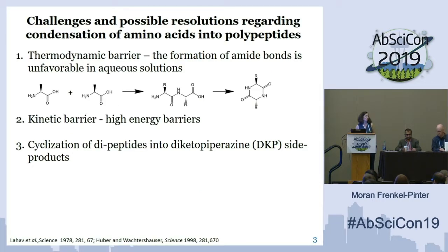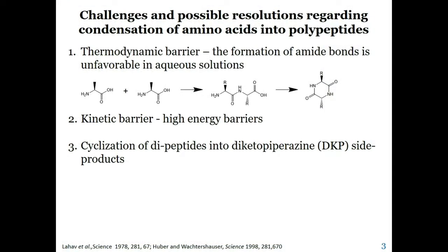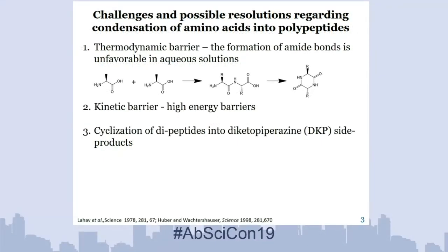Before diving into our mutualism project, when we look at the formation of peptides on the prebiotic earth, we face several challenges with condensation of amino acids into polypeptides. The first challenge comes from thermodynamics — it is thermodynamically unfavorable to form the amide bond in aqueous solutions. Next, we have two kinetic barriers: first, forming amide bonds requires high activation energy; and second, if we did form a dipeptide, it can undergo another amidation to form a cyclic six-membered ring called diketopiperazine, which is hydrolytically very stable, making it hard to further elongate the polymers being formed.